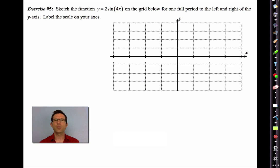Exercise 5 says, sketch the function y = 2sin(4x) on the grid below for one full period to the left and right of the y-axis. Label the scale on your axes. Let's talk about what we should feel very comfortable with right now. We should feel very comfortable with the fact that the amplitude is 2. And there's no vertical shift. All that means is we're going to be rising and falling 2 units above our x-axis. But notice, curiously, our x-axis isn't scaled at all for us. That's what we need the period for. We need to find the period.